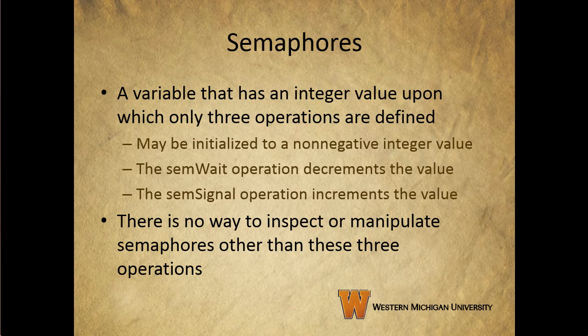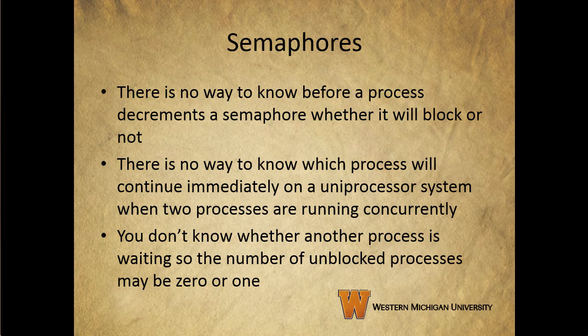So if we have negative three and issue a semSignal, that increments it to negative two, meaning three processes were blocked and waiting. We take one of those and allow it to continue execution, getting it out of the blocked state. This leads to some interesting consequences — there's no way to know before a process decrements a semaphore whether it will block or not. After a process increments a semaphore and another process gets woken up, both run concurrently, and there's no way to know which process will continue immediately on a uniprocessor system — it could swap out to a completely different process. When you signal a semaphore, you don't necessarily know whether another process is waiting, so the number of unblocked processes may be zero or one.